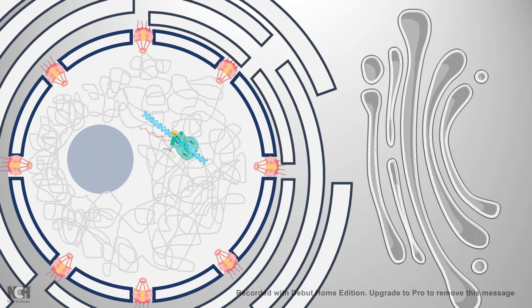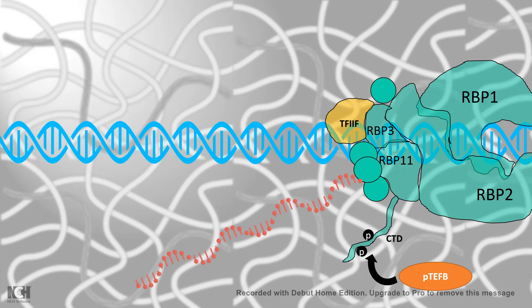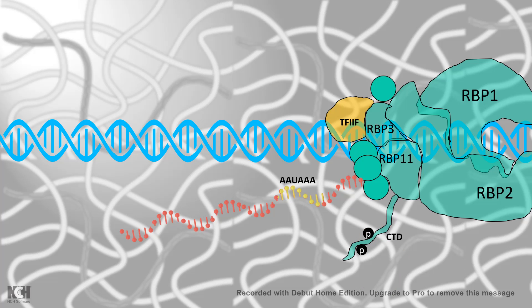In eukaryotes, transcription takes place inside the nucleus. During the transcription process, elongation takes place and while the mRNA is protruding out from the RNA polymerase, there are several enzymes getting attached to the C-terminal domain of the RNA polymerase, like capping enzymes and alternative splicing enzymes. When the elongation process is almost at an end, a key sequence is encountered.